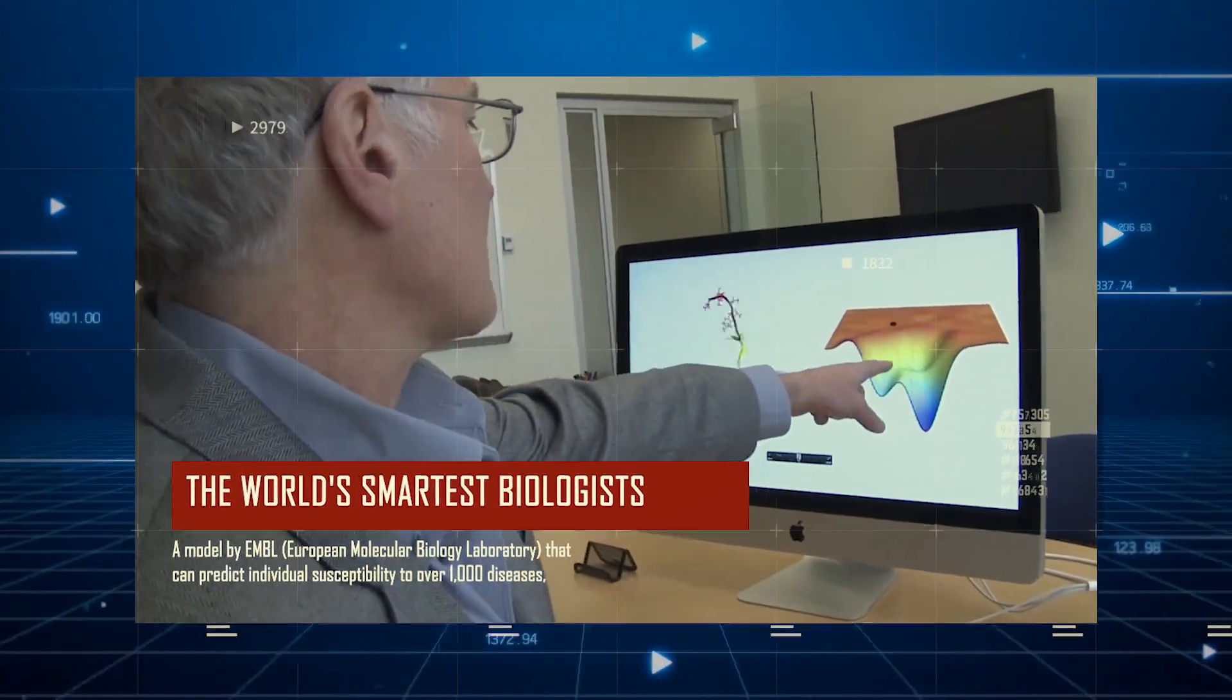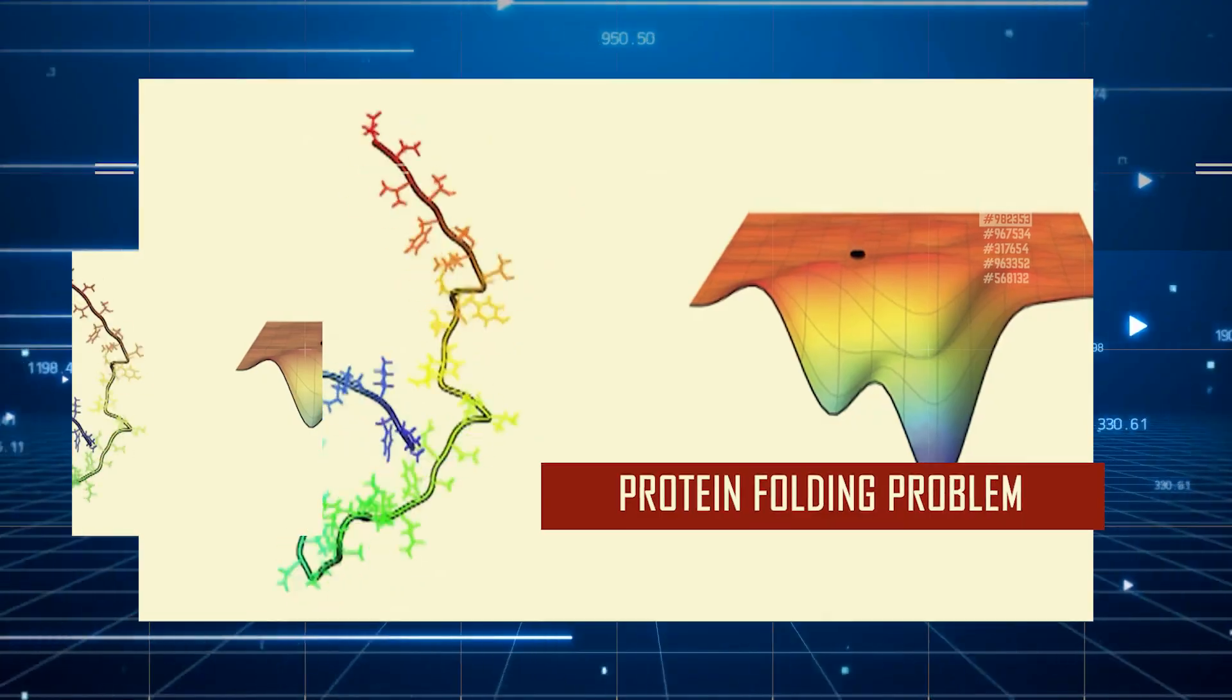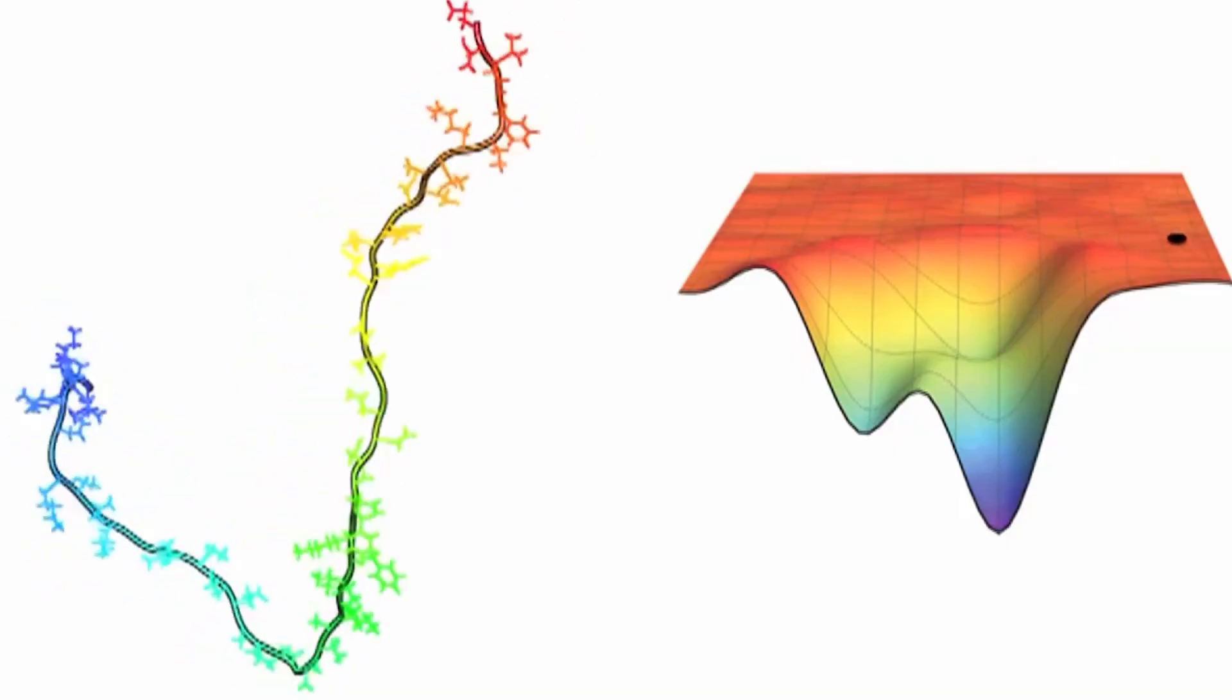For over 50 years, the world's smartest biologists were stumped by what they called the protein folding problem. Here's why it mattered.